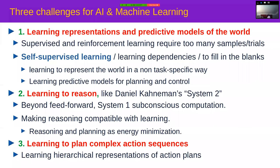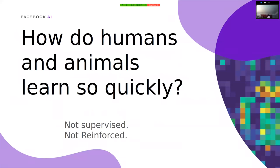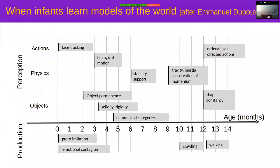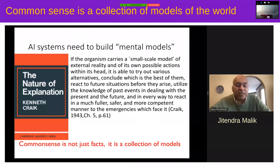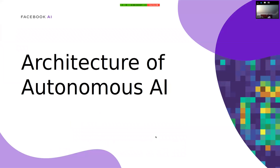How do humans and animals learn so quickly? Classic work in psychology — particularly from Tolman in the 1940s, referenced here from my friend Jintana Ramalik — basically said that common sense in humans is not just knowledge, it's a collection of models. I'm now going to jump right in and make a proposal for an architecture for an autonomous AI system.